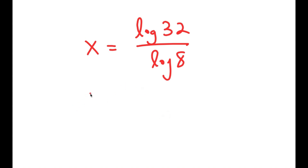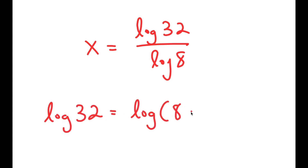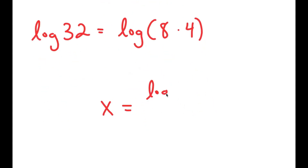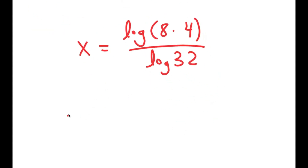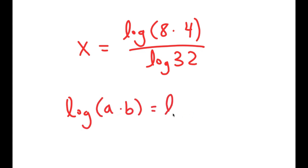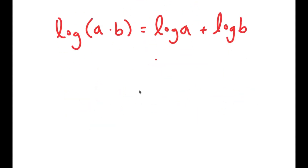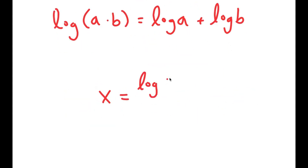Now, log of 32 is the same thing as log of 8 times 4. And if I have something in the form log of a times b, this is equal to log a plus log b. So in this case, the numerator becomes log of 8 plus log of 4.